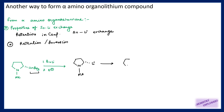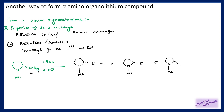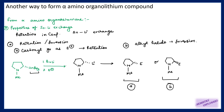The important property of this tin-lithium exchange is it will show retention of configuration. If I am using an electrophile there are two possibilities — the electrophile can attach on the same side or the opposite side of lithium. Most of the time when we are using carbonyl groups as an electrophile there is retention, giving us the A-type product. If I am using an alkyl halide as an electrophile then I will get inversion.